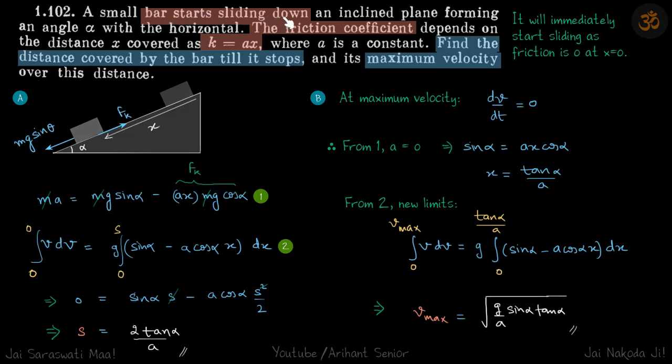A bar slides down an inclined plane and the friction is varying as a function of x. So as it goes down, the friction is increasing, so of course it will stop at one moment. And we need to find what is the distance covered by the particle until it stops and what is the maximum velocity it has attained during that motion.